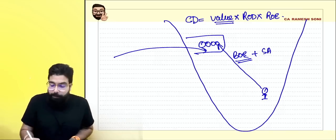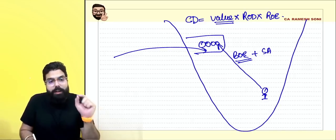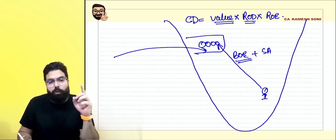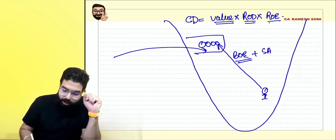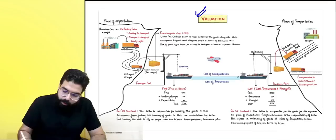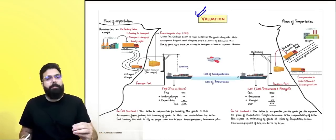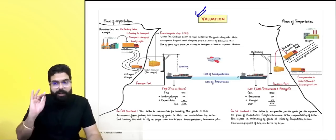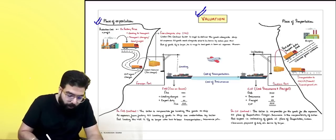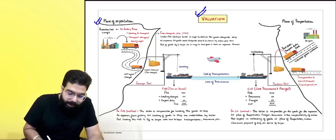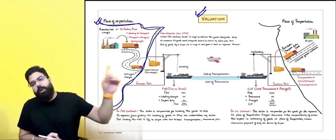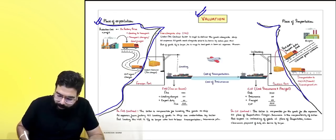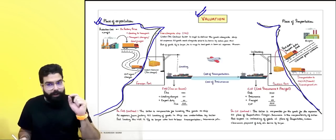In this chapter we are going to learn how to find out the value, what date's rate of duty shall be applicable, and what date's rate of exchange shall be applicable. Chapter four on valuation helps you find out the value. Always remember: if goods are coming from the US, we call it the place of exportation. If goods are coming to India, India becomes the place of importation.